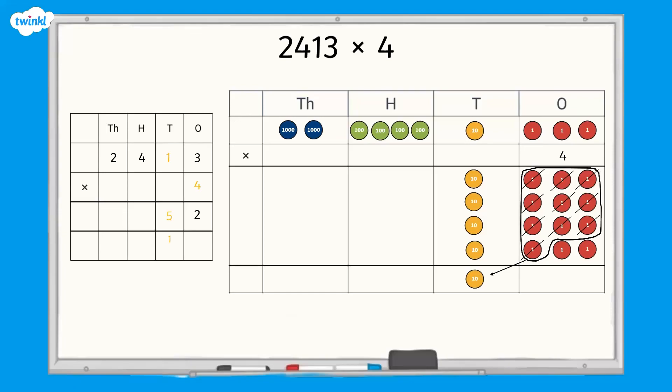Now we need to multiply the hundreds. Four hundreds multiplied by four equals sixteen hundreds. We regroup ten of these hundreds into one thousand. This leaves us with six hundreds.